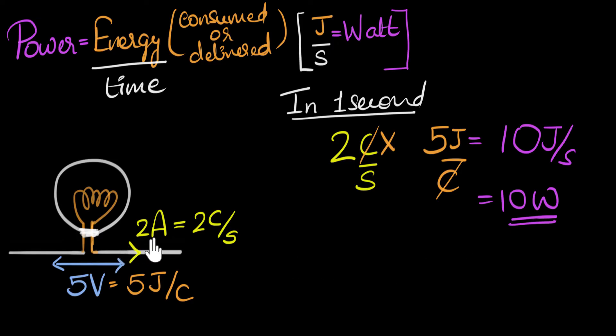Now, if the current was, let's say, three amperes, then in one second, three coulombs would pass by. And so, this would be three. On the other hand, if the voltage was, let's say, twenty volt, then for every coulomb that passes by, twenty joules of energy would be delivered to the bulb, and so this would be twenty. So, can you see that in order to calculate power, all we are doing is multiplying the current with voltage.